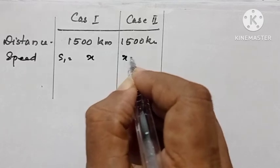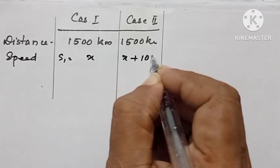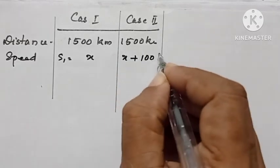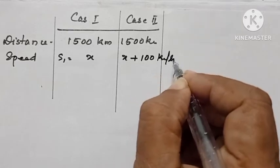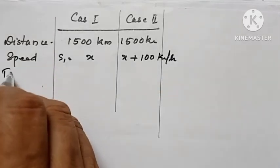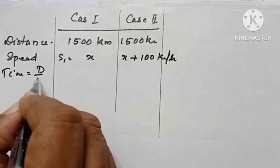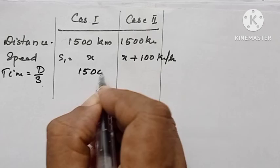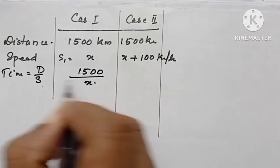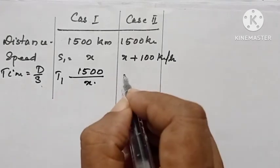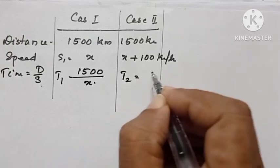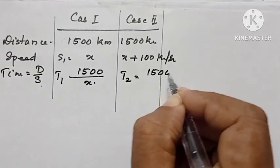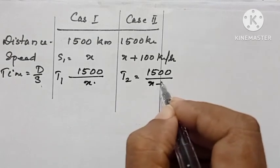In the second case, speed is equal to x plus 100. We can take it as S2. And time is equal to distance divided by speed, equal to 1500 divided by x, that is t1, t2. 1500 divided by x plus 100.